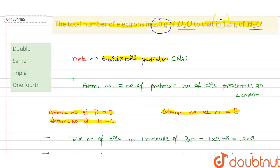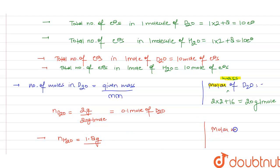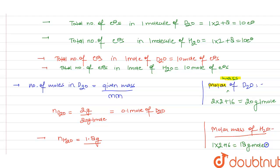Similarly, we find the number of moles of H2O in 1.8 gram. The molar mass of water: hydrogen has molar mass 1, oxygen is 16, so it will be 1 times 2 plus 16, giving 18 gram per mole. So the number of moles of H2O equals 1.8 gram divided by 18 gram per mole, which gives 0.1 mole of water.